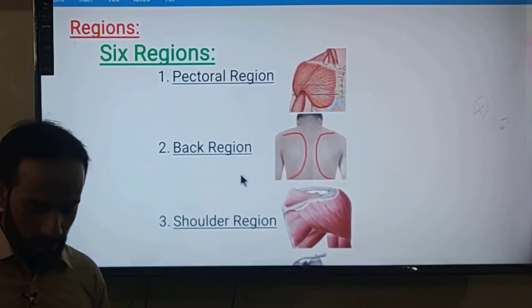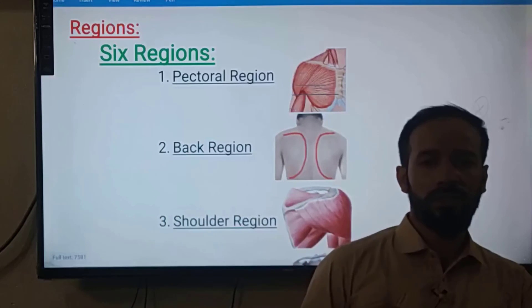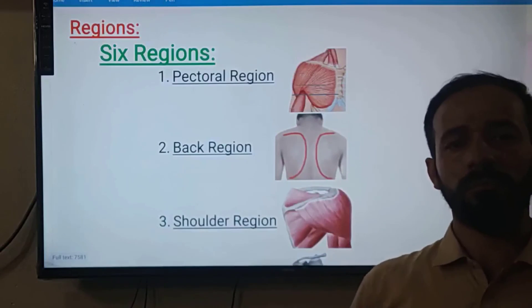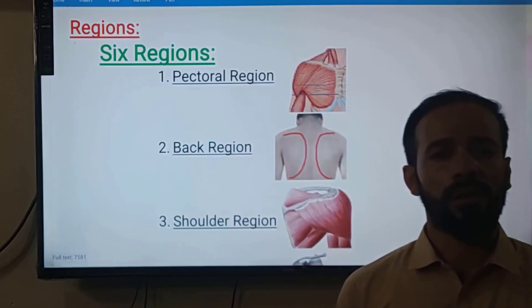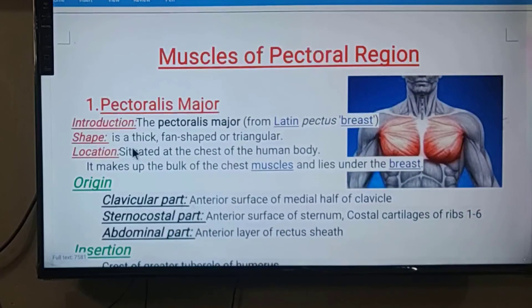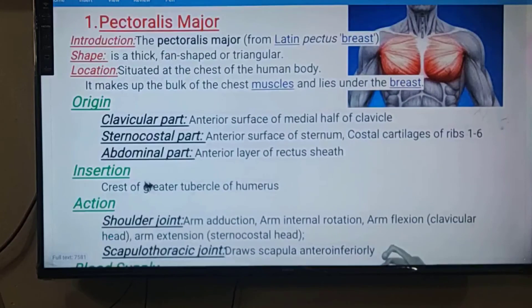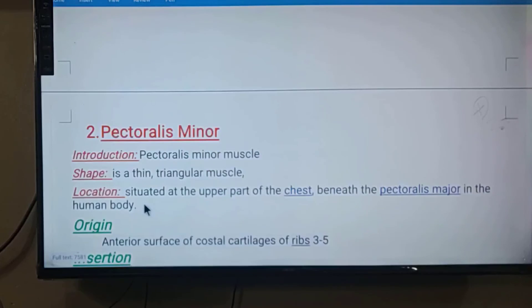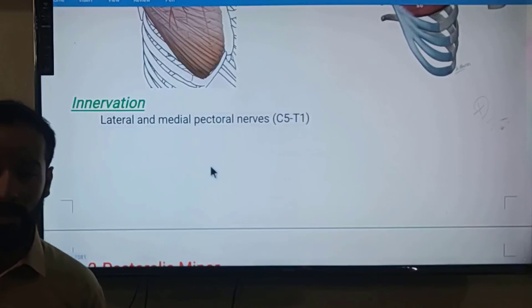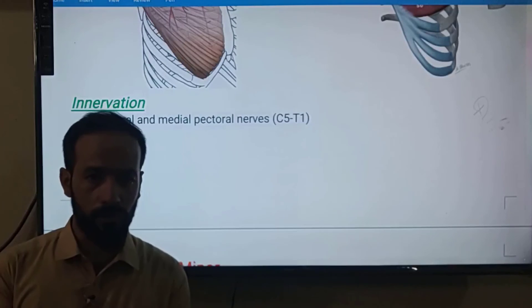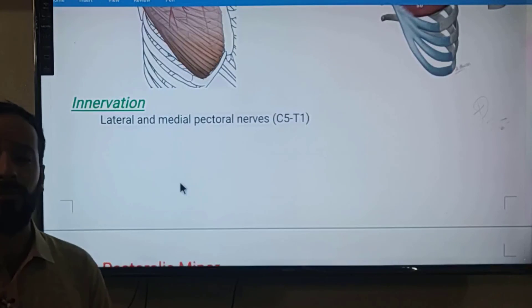To summarize: the upper limb is divided into six regions — pectoral, back, shoulder, arm, forearm, and hand. The first muscle of the pectoral region is pectoralis major, covering its introduction, shape, location, origin, insertion, actions, blood supply, and innervation. In the next lecture we will discuss pectoralis minor. Please share this channel with your college and university friends so they can also benefit.